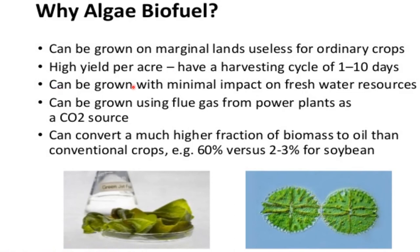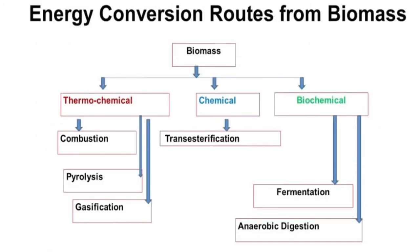Algae can be grown with minimal impact on freshwater resources, and can be grown using flue gas from power plants as a carbon dioxide source. Since carbon dioxide is required for plant growth, the CO2 from power plant flue gas can be utilized — helping to control greenhouse gases. Algae can also convert a much higher fraction of biomass into oil than conventional crops: for example, soybean has an oil content of about 2 to 3 percent versus algae which consists of 60 percent.